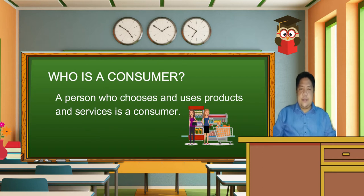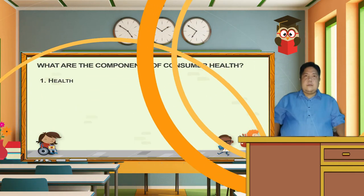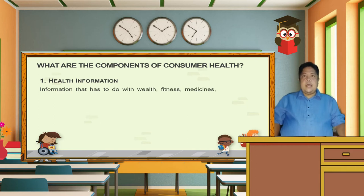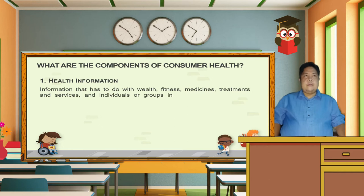What are the components of consumer health? The components of consumer health are as follows. Number one: health information — information that has to do with health, fitness, medicines, treatments, and services, and individuals or groups in the health profession, is considered health information.